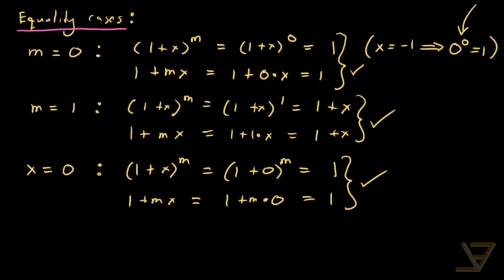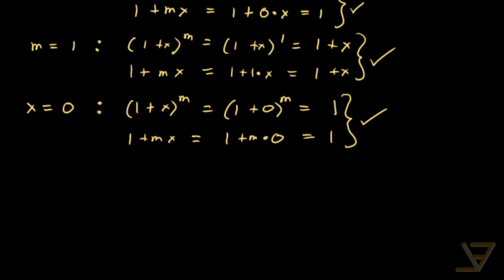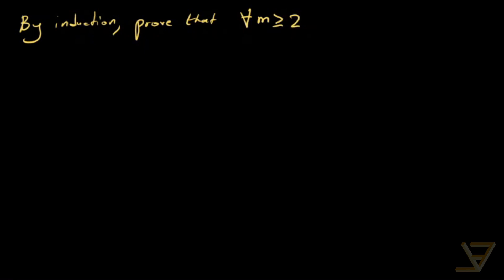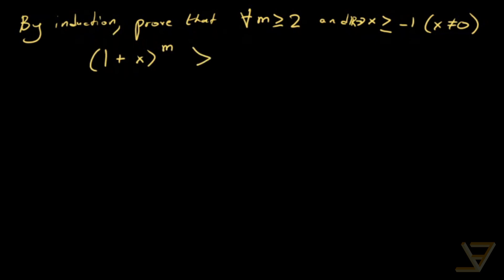We've shown that equality holds in those particular cases. Now we're going to show that in every other case, the strict inequality holds. By induction, we will prove that for all m greater than or equal to two — since we've taken care of m equals zero and one — and x greater than or equal to negative one, but x not zero, we have that one plus x to the power of m is strictly greater than one plus mx. We're going to do this by induction on m equals two, three, four, and so on.